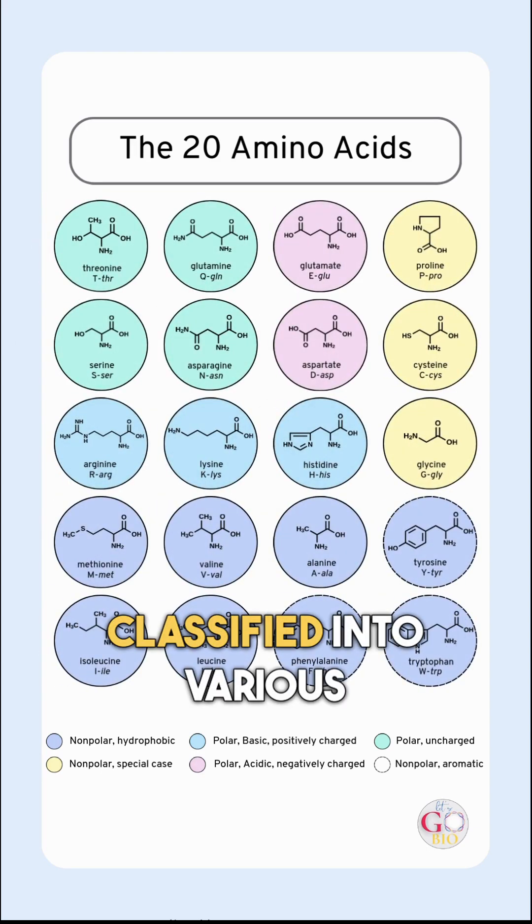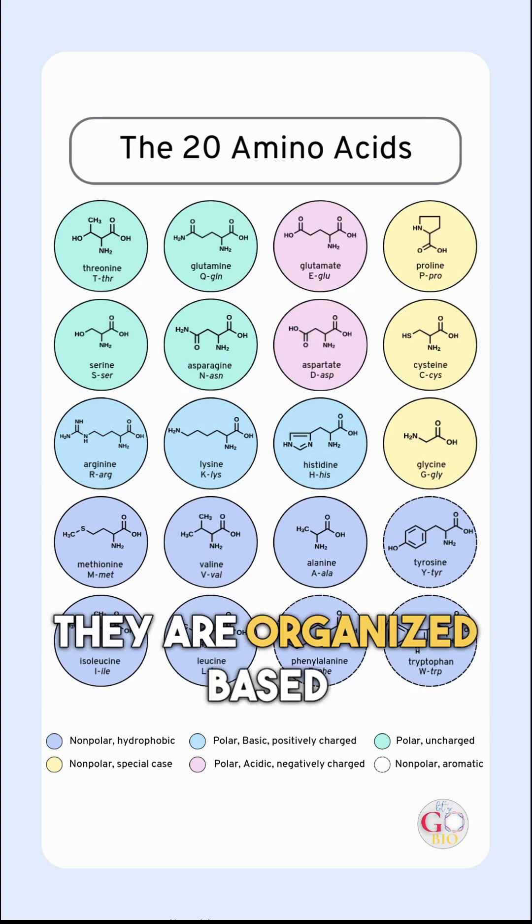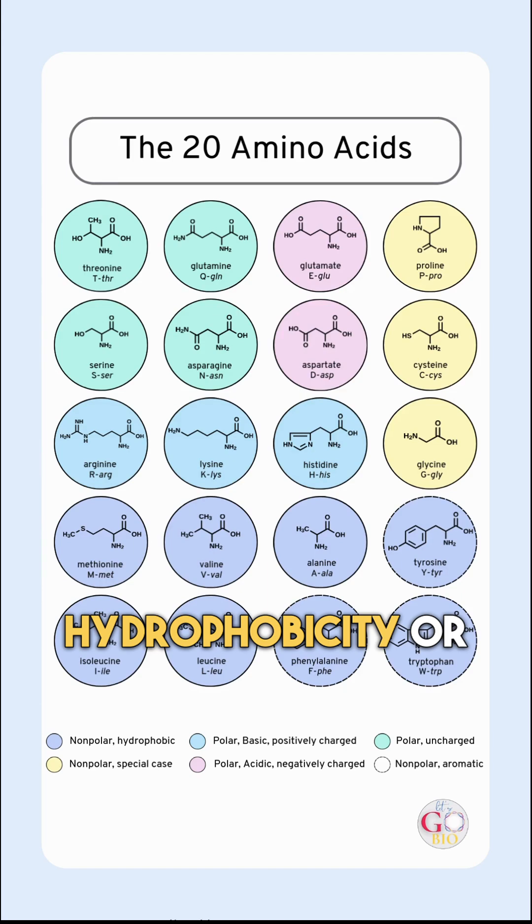The 20 amino acids are classified into various groups, as you can see by the color coding on this chart. They are organized based on charge, hydrophobicity or hydrophilicity, and aromaticity.